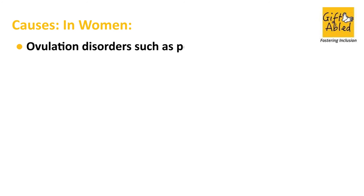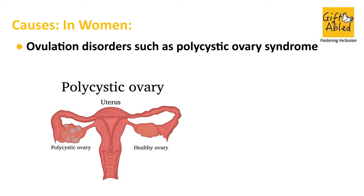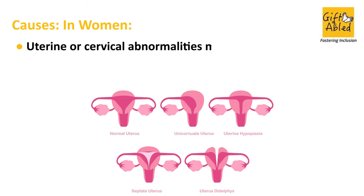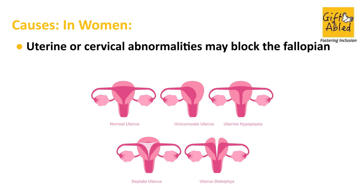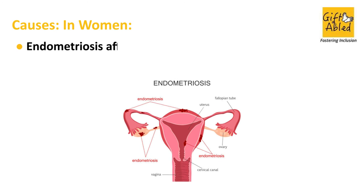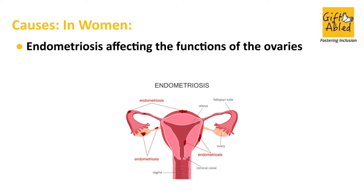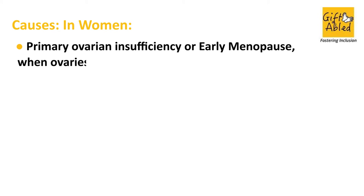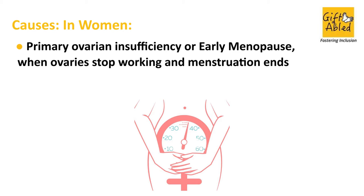Causes in women: ovulation disorders such as polycystic ovary syndrome and imbalance in thyroid; uterine or cervical abnormalities that may block the fallopian tubes; fallopian tube damage or blockage; endometriosis affecting the functions of the ovaries; and primary ovarian insufficiency, or early menopause, when ovaries stop working and menstruation ends before the age of 40.